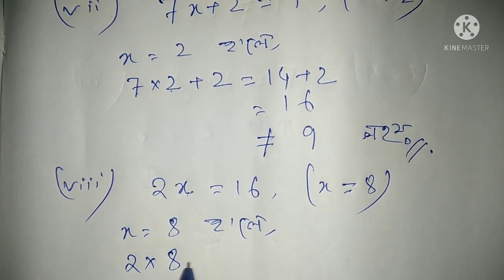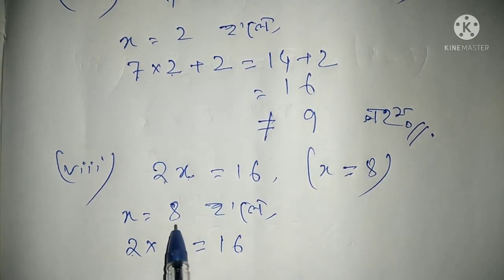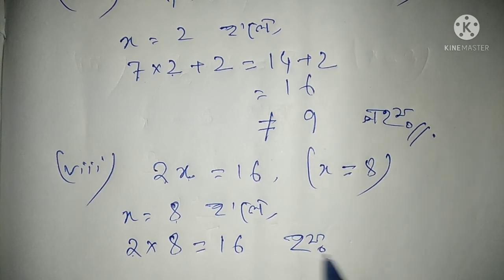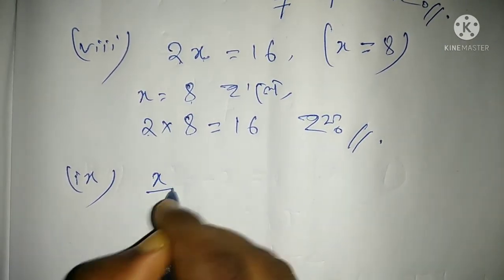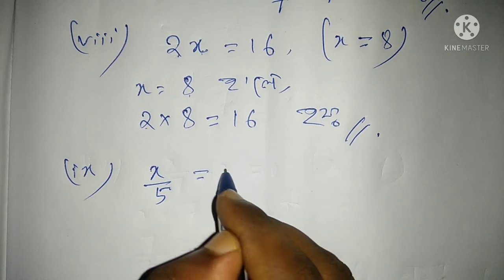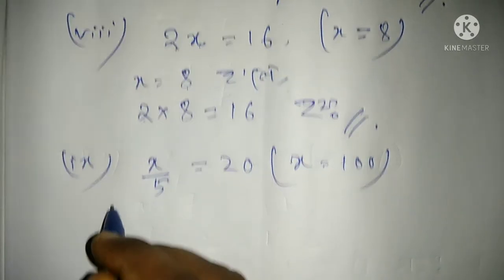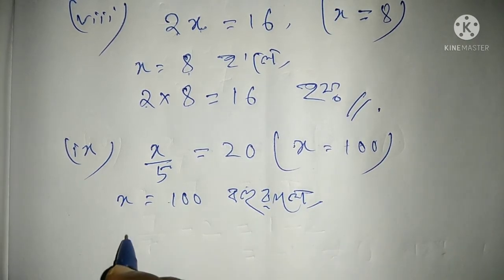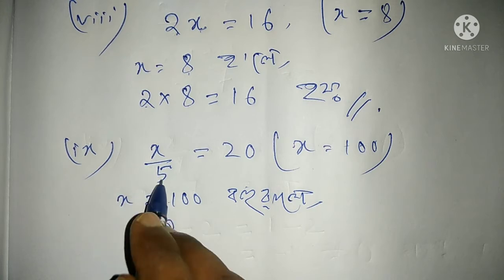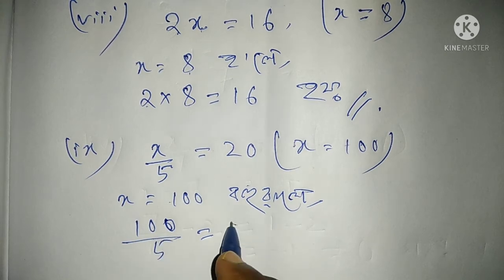We have to make it 2 into 8 equals 16. x by 5 equal to 20, x equal to 100. Checking: x equal to 100, 100 by 5 is 20. Correct.